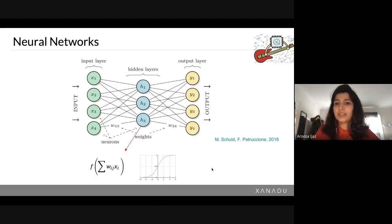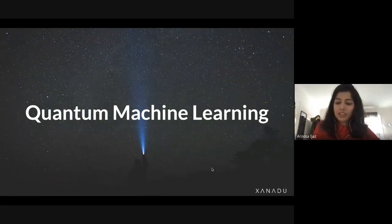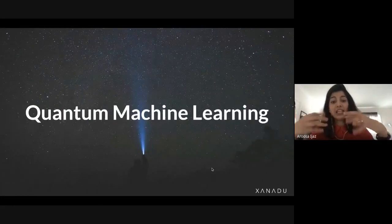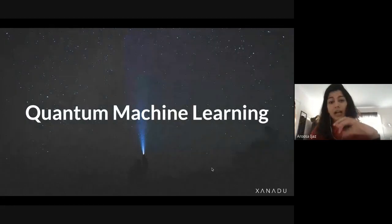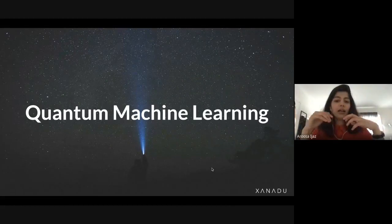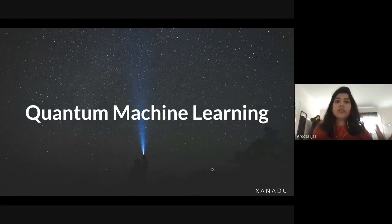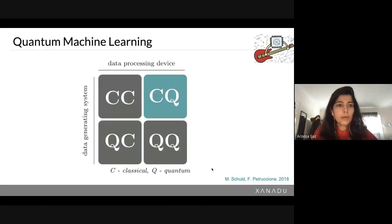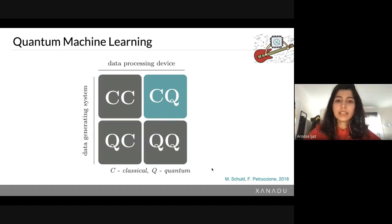Quantum machine learning is the area where we try to bring these unique concepts from quantum mechanics and see if we can either boost current machine learning algorithms or come up with novel algorithms based on the principles of quantum mechanics. This is possible because of the unique features of quantum mechanics — we can generate very different kinds of patterns, recognize different correlations, or do linear algebra in a more efficient way. These are the things everybody working in quantum machine learning wants to explore.